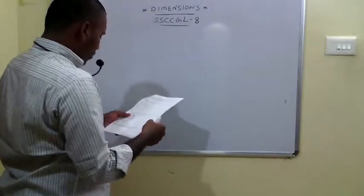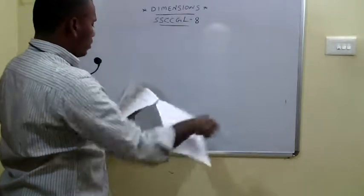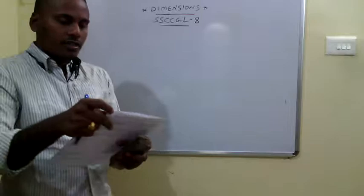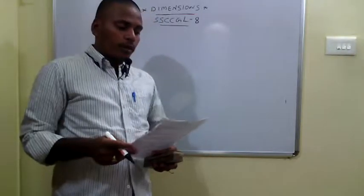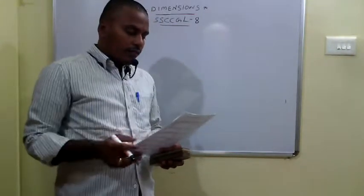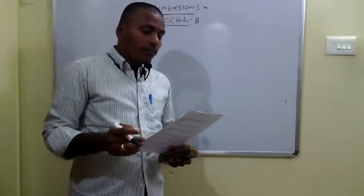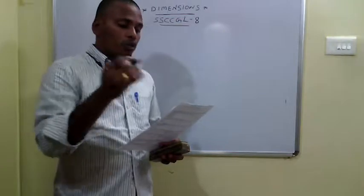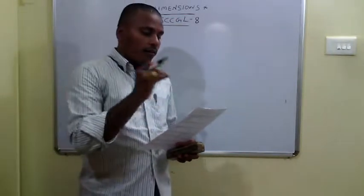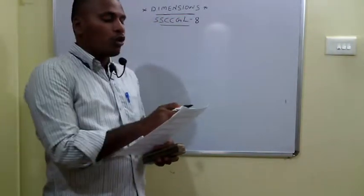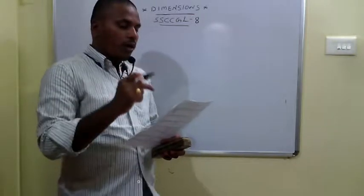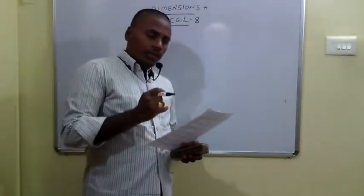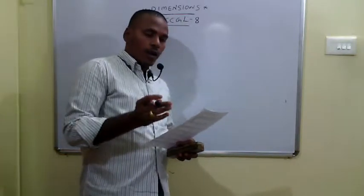For questions 71 to 75, we have data interpretation problems with different types of mission tools P, Q, R, S, T and their production in different years from 2011 to 2016. The 71st question asks for the difference in production of R-type mission tools from 2011 to 2016. In 2011 the value is 27 and in 2016 it is 31, so the difference is 4 lakhs.